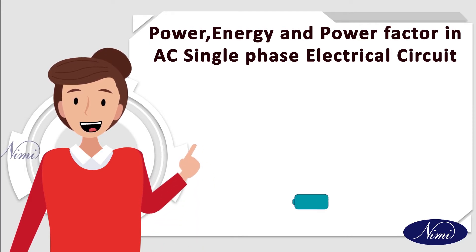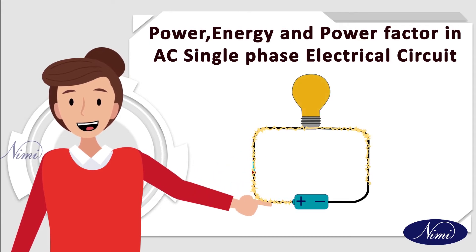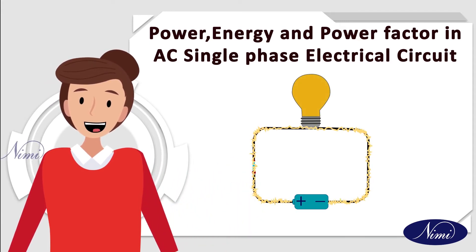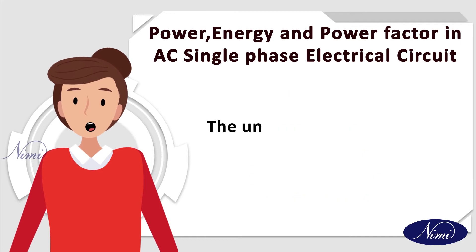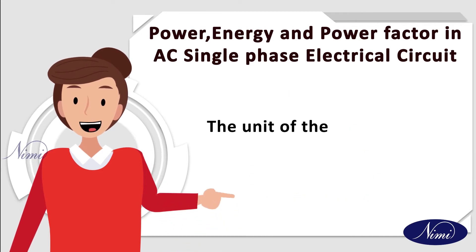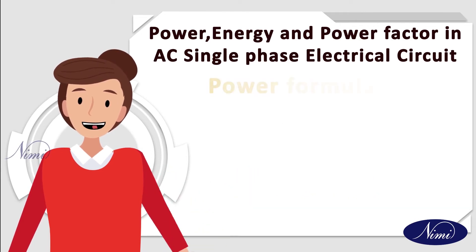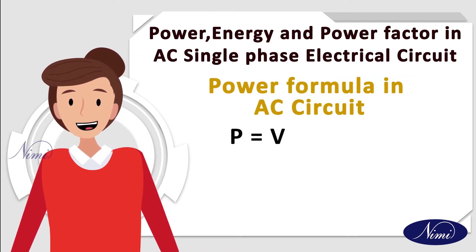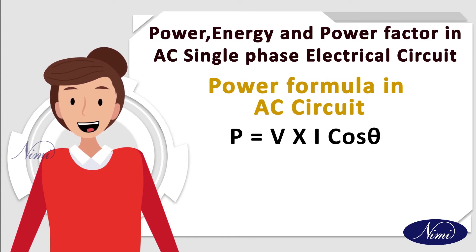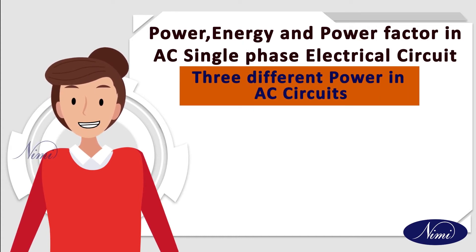What is power? Power means it is a rate of energy consumed in an electrical circuit. The unit of power is watts. The formula for power in AC circuit is P is equal to V·I·cos theta. There are three different powers in an AC circuit.